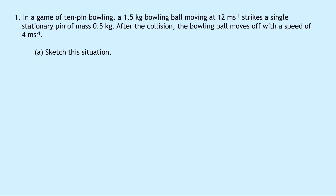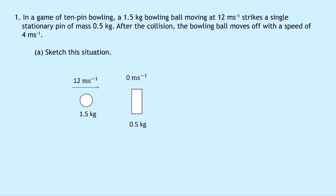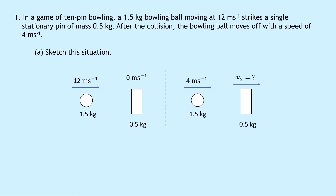Question 1 says that in a game of 10 pin bowling, a 1.5 kilogram bowling ball moving at 12 meters per second strikes a single stationary pin of mass 0.5 kilograms. After the collision, the bowling ball moves off with a speed of 4 meters per second. Part A says to sketch this situation. So we'll start with the bowling ball of mass 1.5 kilograms moving to the right at 12 meters per second, and the pin of 0.5 kilograms which is stationary at 0 meters per second. After the collision, the bowling ball is moving to the right at 4 meters per second, and the pin of mass 0.5 kilograms is now moving to the right with an unknown speed v2.